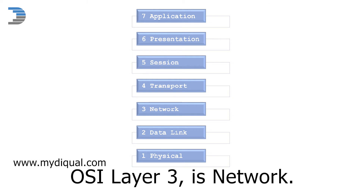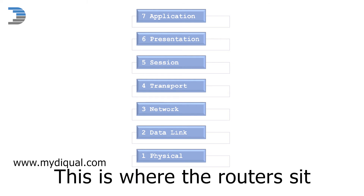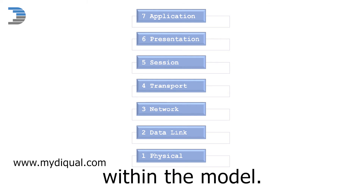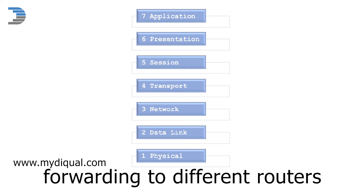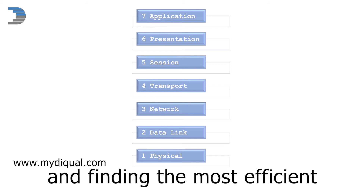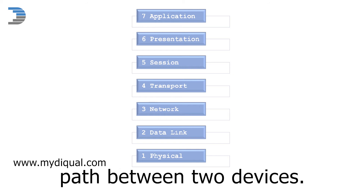OSI layer 3 is network. This is where the routers sit within the model. This layer represents data forwarding to different routers and finding the most efficient path between two devices.